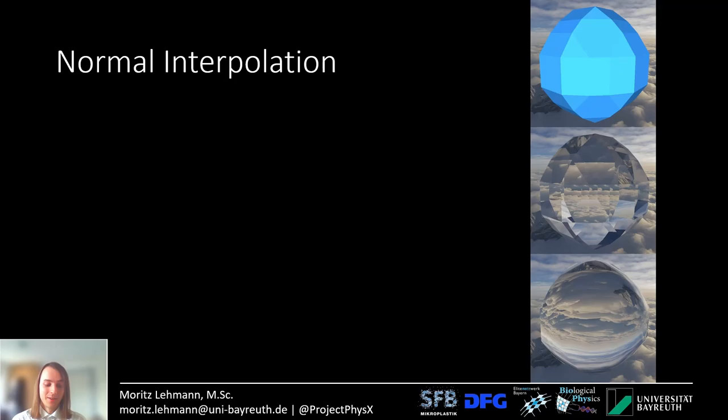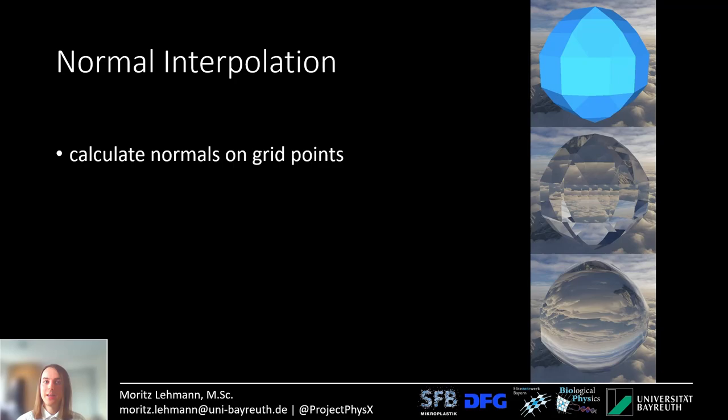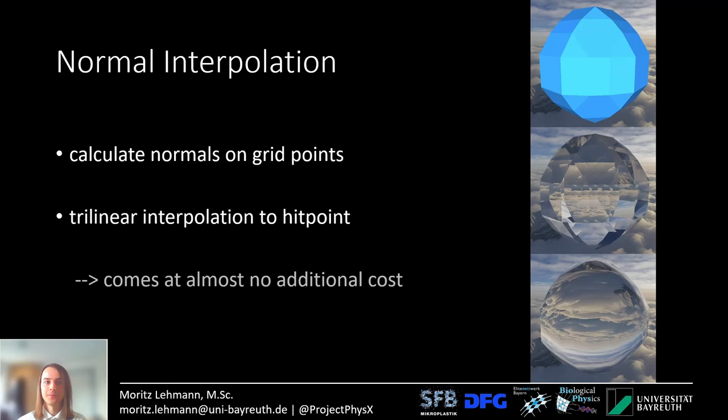Now let's make the ray traced surface look very nice. For this I use normal interpolation. The top image shows the triangles as generated by marching cubes and rasterized. The middle image shows ray traced triangles with flat surfaces, and the bottom image shows the surface with interpolated normal vectors — there you can see all the reflections and it looks smooth and nice. What's funny is that the silhouette of the droplet still has the jagged edges of the triangles.